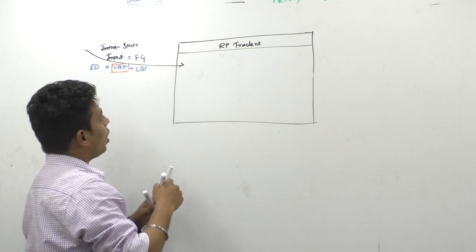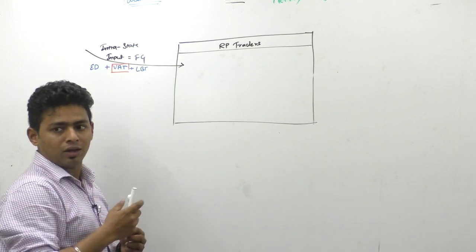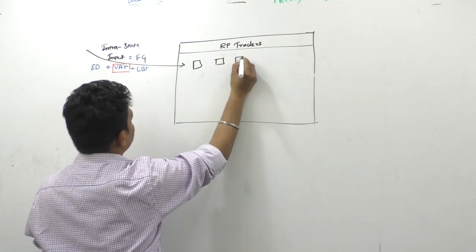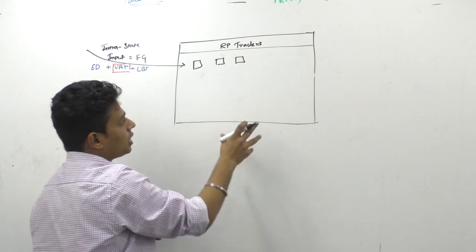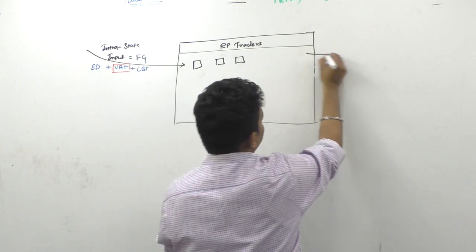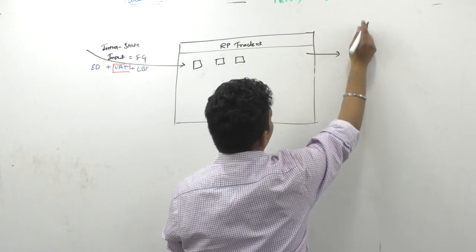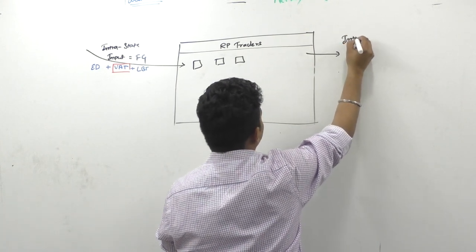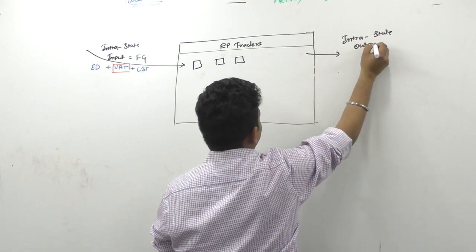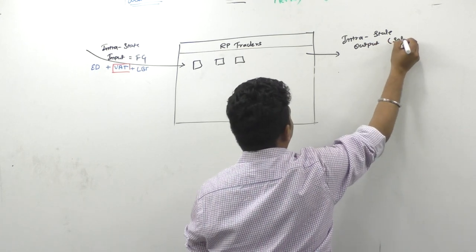Now what will you do, you will keep the stock at your store room, this is your stock. After some day, some person will come to buy this stock. That is your output. Intrastate output or interstate output? Intrastate output. In technical language, sale.